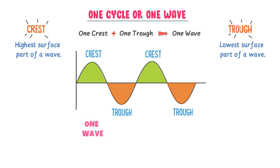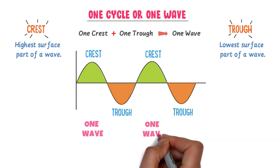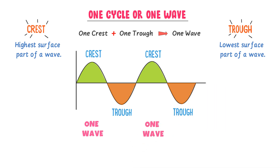This crust and this trough form another wave. So there are total two waves present in this wave motion. Note that one crust and one trough form one wave or one cycle.